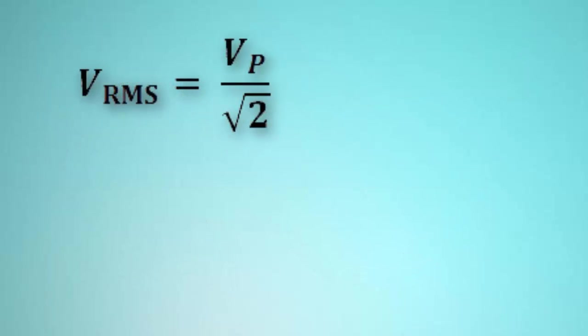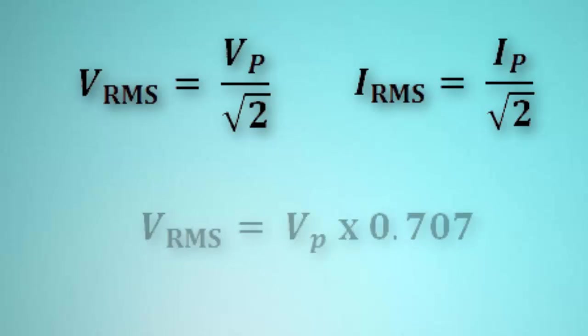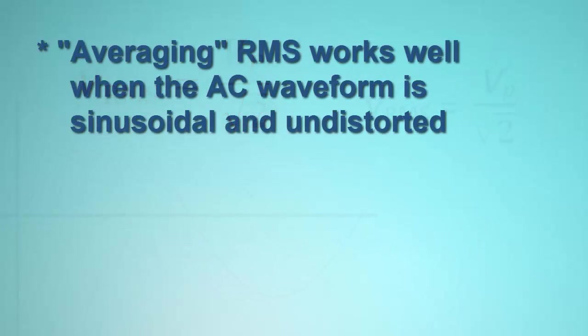This formula can also be used to calculate effective AC current. And for a quick approximation, you can calculate effective power by simply multiplying the peak power by 0.707, which represents the decimal form of 1 over the square root of 2. This simple RMS equation forms the basis of so-called averaging RMS instruments. For electrical systems where the AC cycle is sinusoidal and reasonably undistorted, these products can produce accurate and reliable results.